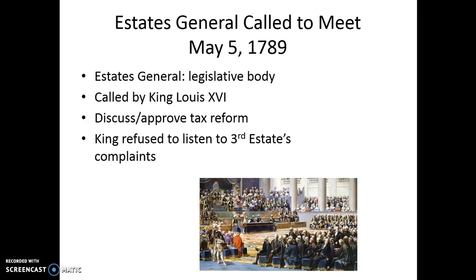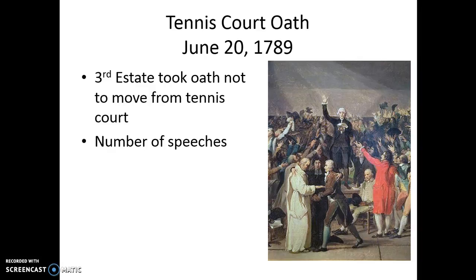Let's look at a timeline of major events. On May 5, 1789, the Estates General — the legislature of France — was called to meet to discuss tax reform. King Louis refused to listen to the Third Estate's complaints, and the Third Estate was quite angry about his treatment of the lower class. So on June 20, 1789, the Third Estate took the Tennis Court Oath. They moved their protest to a nearby tennis court, gave a number of speeches, and vowed to create a new constitution for France.